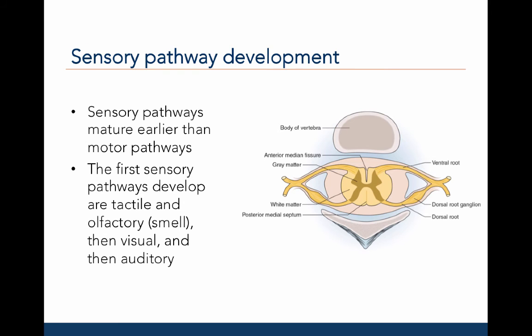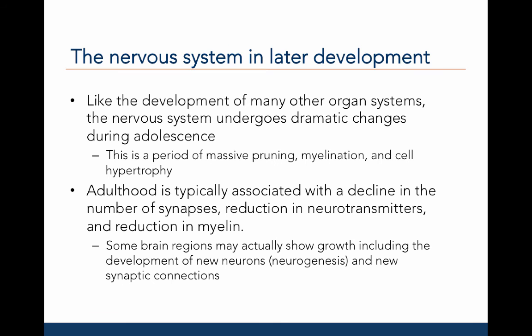The sensory pathways, from the body to the brain, mature earlier than the motor pathways, which exit the brain to the body. The first sensory pathways to mature are tactile and olfactory, or smell, followed by visual and then auditory pathways. Like the development of many organ systems, the nervous system undergoes dramatic changes during adolescence, which is a period of massive pruning, myelination, and cell hypertrophy.